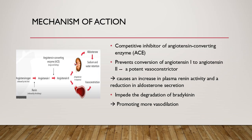Acting as a competitive inhibitor of angiotensin-converting enzyme (ACE), Captopril stops the conversion of angiotensin I to angiotensin II, which is a very potent vasoconstrictor. As a result, it causes an increase in plasma renin activity and a reduction in aldosterone secretion, thereby lowering blood pressure. Captopril also blocks the breakdown of bradykinin; the increased bradykinin level contributes to the vasodilator action of ACE inhibitors and is also believed to be responsible for the troublesome side effect of a dry cough.